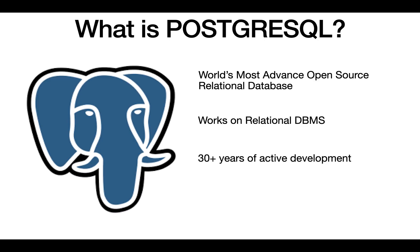Postgres is a type of SQL relational database. They claim it is the world's most advanced open source relational database. Every major company dealing with open source technologies prefers Postgres because it has proven to be really fast and really secure when it comes to database management and data handling. It works on a relational DBMS, meaning you can create different tables in Postgres and then connect these tables with each other.